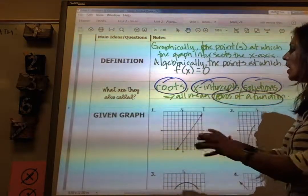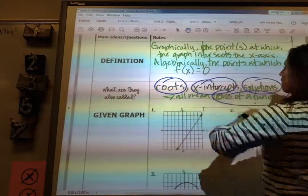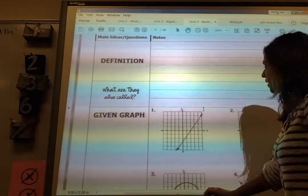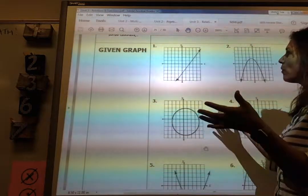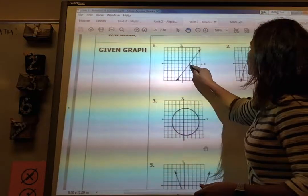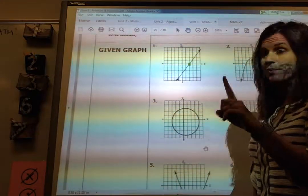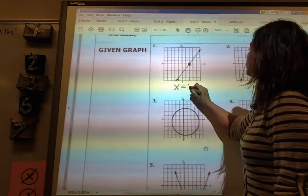So let's talk about what that looks like when I'm given a graph, because we have the graphic representation. So on a graph, I said where it crosses your x-axis. So if I look at this graph, there's only one time in which it crosses the x-axis. So there is only one solution, and it's going to be x equals two.